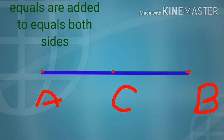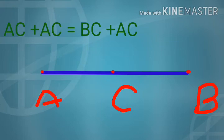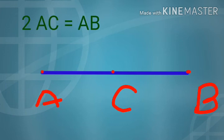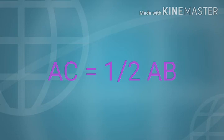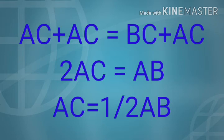When we add AC to AC, we get twice of AC, which equals the total length AB. We add AC on both sides, so the equation becomes AC plus AC equals BC plus AC. The LHS becomes 2AC, and the RHS is BC plus AC, which is the total length AB. So 2AC equals AB, therefore AC equals half of AB.